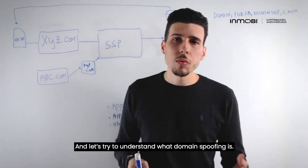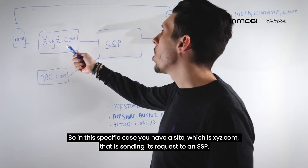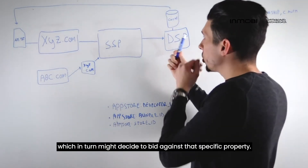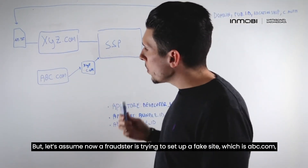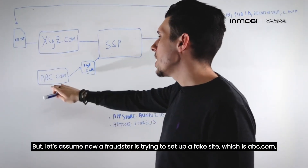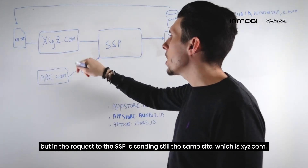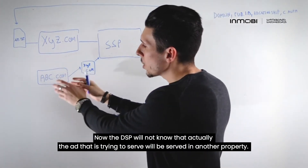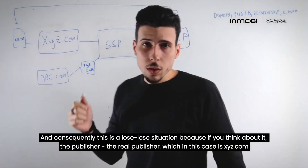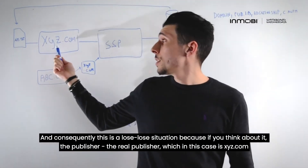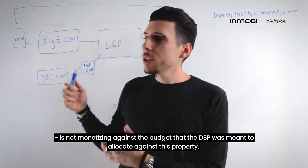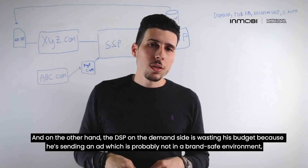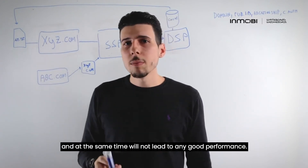Let's understand what domain spoofing is. You have a site, xyz.com, sending its request to an SSP — a legitimate use case — and the SSP sends the request to the DSP, which might bid against that property. But suppose a fraudster sets up a fake site abc.com and in the request to the SSP still sends xyz.com as the site. The DSP won't know the ad will actually be served in a different property. This is a lose-lose situation: the real publisher, xyz.com, is not monetizing the budget the DSP intended for it, and the DSP is wasting budget serving an ad likely not in a brand-safe environment and with no good performance.